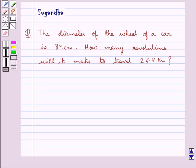Hello and welcome to the session. In this session we discuss the following question: The diameter of the wheel of a car is 84 cm. How many revolutions will it make to travel 26.4 km?